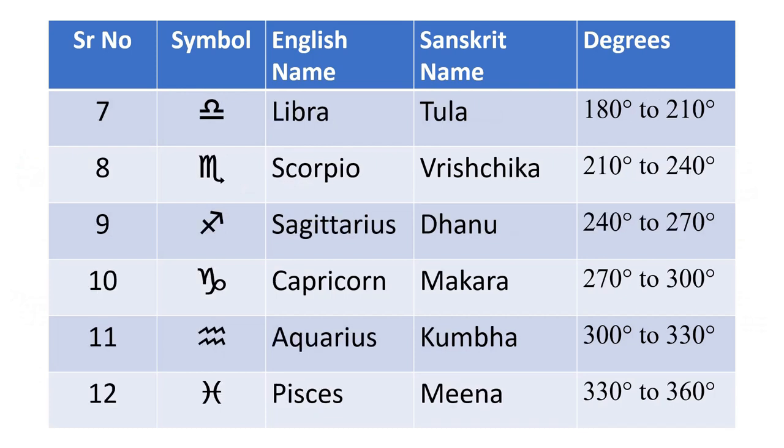The table on this next screen shows the zodiac signs 7 to 12 with the same information as the previous screen. And as you can see, the last sign Pisces starts at 330 degrees and finishes at 360 degrees which is the end of the zodiac.